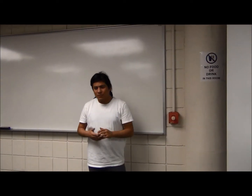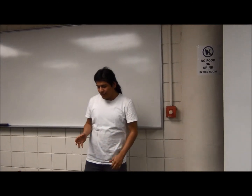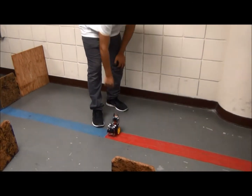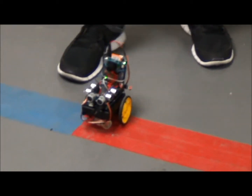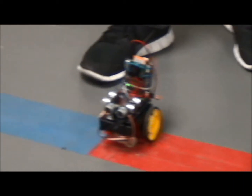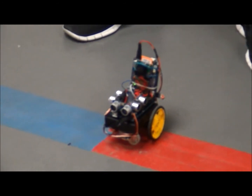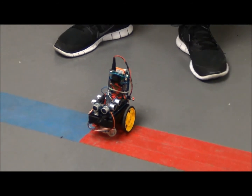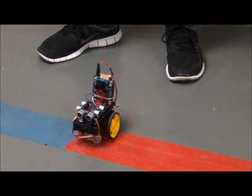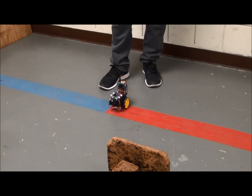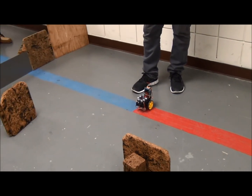For our project, we did a mobile surveillance robot. We used three sensors and a camera. As it moves, the sensor will sense objects around 15 centimeters. When that happens, it moves to the other side so it won't actually hit the object. While it's doing that, it takes a picture around every 10 seconds.